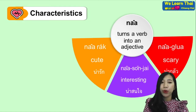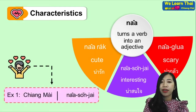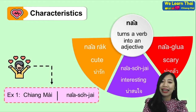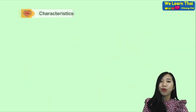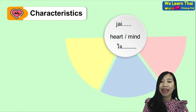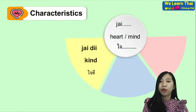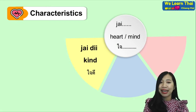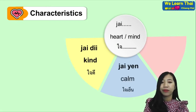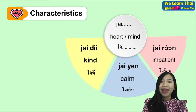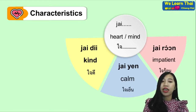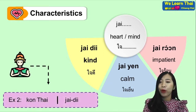We have the word 'na', which means scary in 'na kruwa'. For example: 'Chiang Mai na son jai' — Chiang Mai is interesting. The second important word is 'jai', which means heart or mind. Examples include: 'jai di' — good-hearted, 'jai yehn' — calm, and 'jai ron' — impatient. For example: 'kon thai jai di' — Thai people are good-hearted.